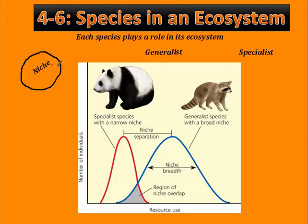In an ecosystem you can talk about two different types of species: generalist species and specialist species. Generalists have broad niches, which means they can live in a bunch of different places, eat a variety of foods, and tolerate lots of different environmental conditions. Some examples here are flies, cockroaches, mice, rats, deer, and raccoons, which we see here in the diagram.